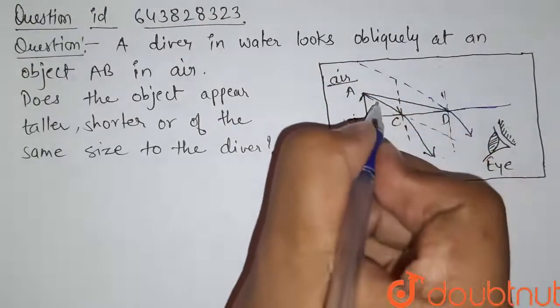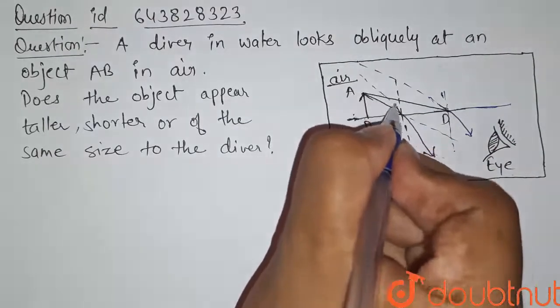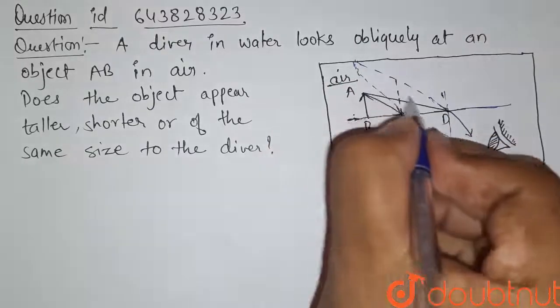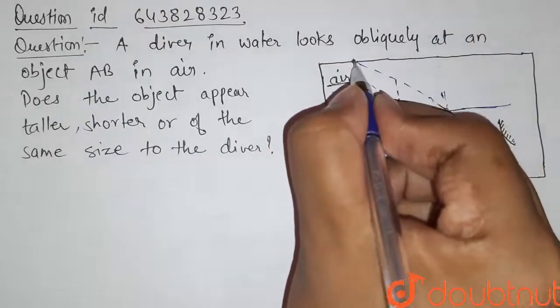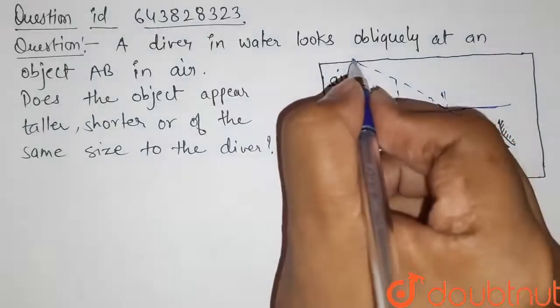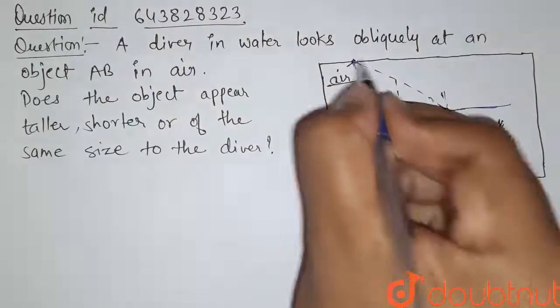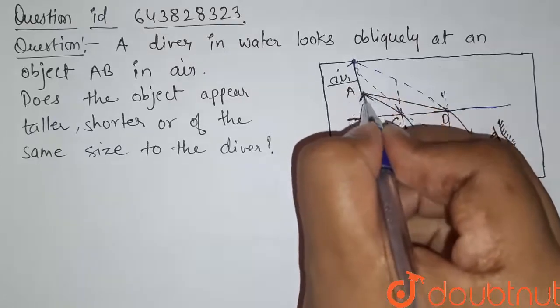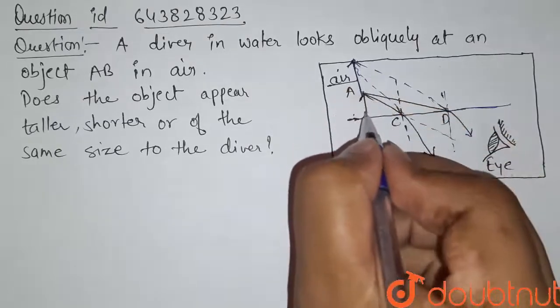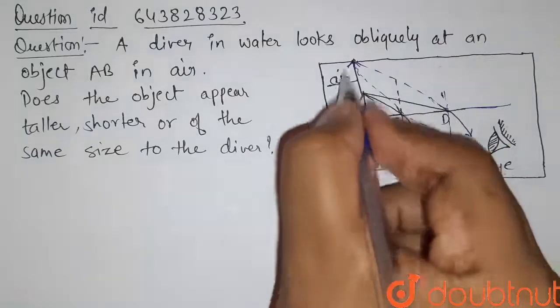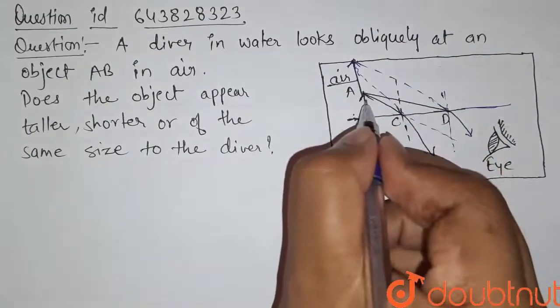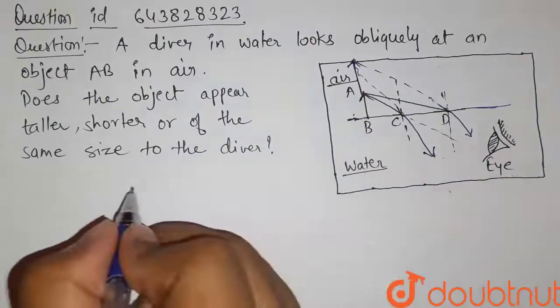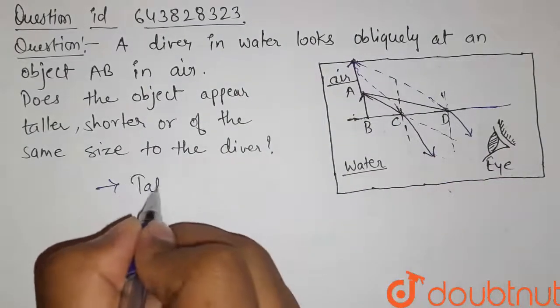So this is the point where this eye is seeing the object head. This is the actual length for this object, and now we can clearly see that the object is looking taller than the actual length for this diver inside the water.